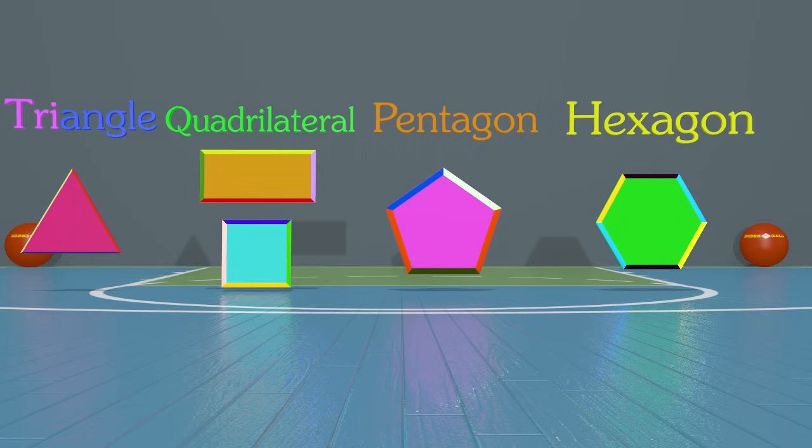Tri means three, that's why a triangle has three sides and three angles. The word quad means four, that's why a quadrilateral has four sides and four angles. Pent means five, which is why a pentagon has five sides and five angles. And hex means six, so it has six sides and six angles. Phew, that's a lot to remember. Thanks for learning shapes with me today, guys. It's been awesome. We'll see you next time.